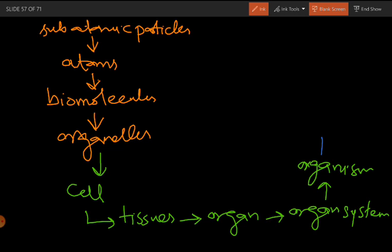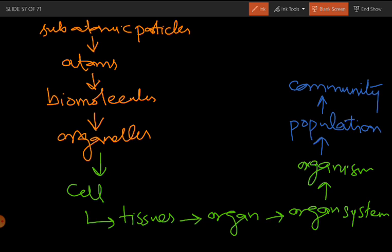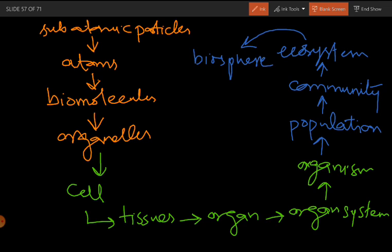Similar kinds of organisms, when they form a group, they form a population. Many populations living together form a community. Many communities combine together and form an ecosystem. All the ecosystems present on the earth collectively form the biosphere.